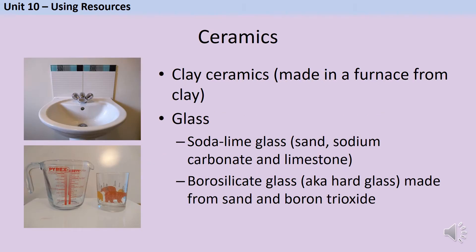Ceramics are non-metallic solids usually made from a raw material that needs heating to a very high temperature. There are two types of ceramic you need to know about for GCSE chemistry: clay ceramics like pottery, and glass. The key difference is that clay ceramics, which are made in a furnace from clay, are opaque, whereas glass ceramics are transparent, and this affects the different things they're used for. Both are hard and waterproof but also brittle, so they shatter easily if dropped. You could be asked about the uses of ceramics and what properties make them appropriate for that use.